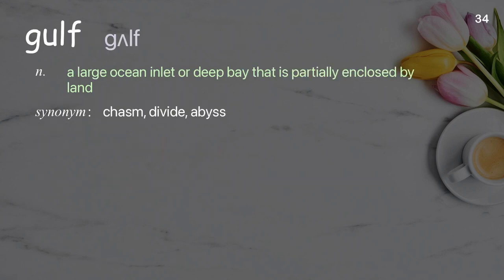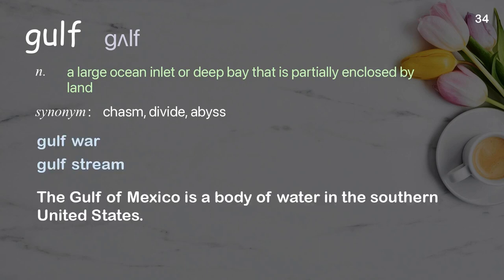Gulf: A large ocean inlet or deep bay that is partially enclosed by land. Examples: Gulf War, Gulf Stream. The Gulf of Mexico is a body of water in the southern United States.